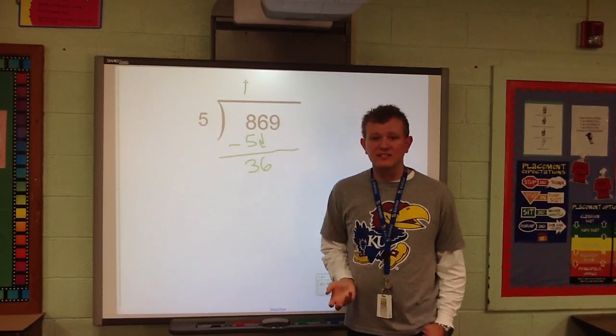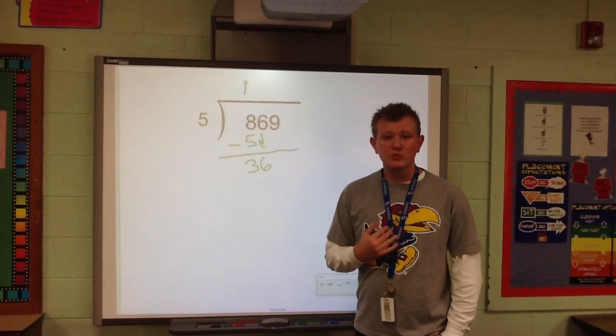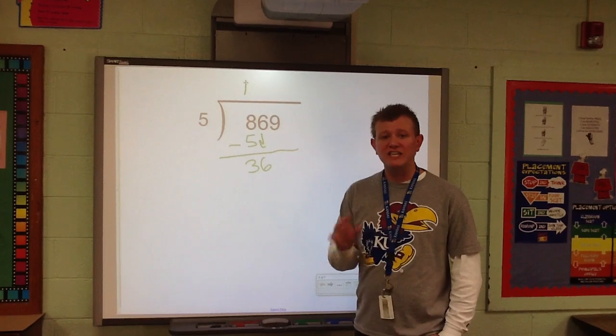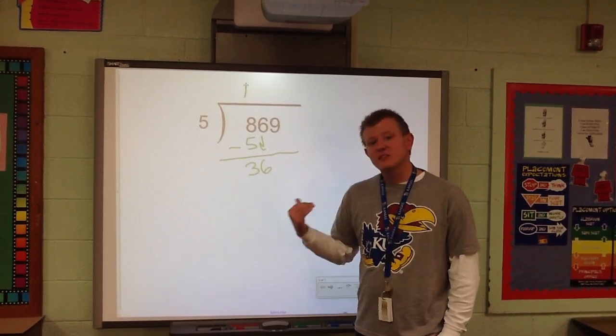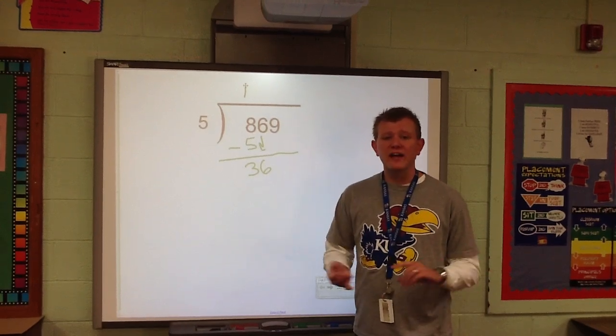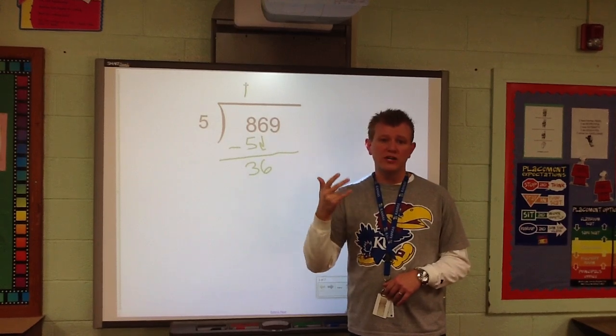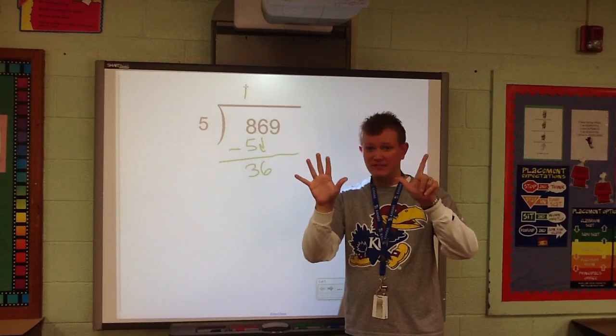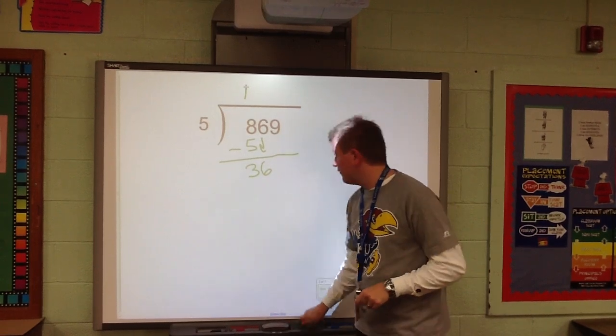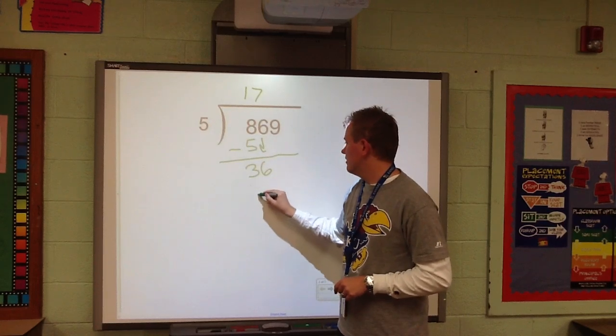Does 5 go into 36? Well, of course it does. And we know our fact families. We know our multiplication facts. We know that 5 times 7 is 35. And that's as close as we can get with 5s to 36. Even if you didn't know that, you could still skip count. 5, 10, 15, 20, 25, 30, 35. I'm at 7. I got 7 fingers up. 7 times 5 is 35. I'm going to put my 7 up top. 7 times 5 is 35.